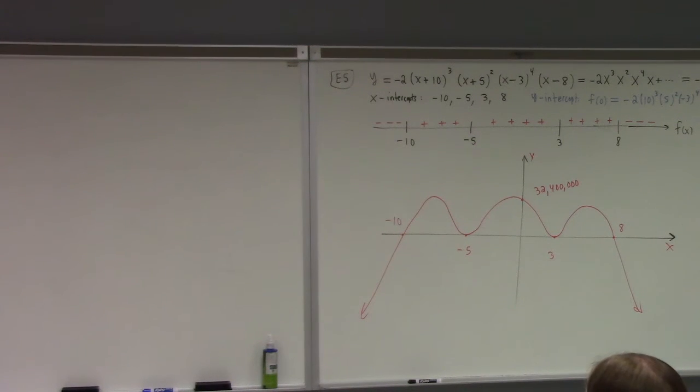So, if we evaluate the function at 2 and at minus 1, we get 0. What does that tell us? That tells us, by the factor theorem, that x minus 2 and x plus 1 are factors.